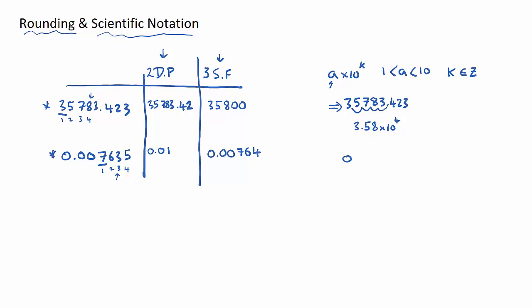For 0.007635 in scientific notation, the decimal point needs to move so the number reads 7.635, which is between 1 and 10. Counting the moves: 1, 2, 3 times. Rounding to two decimal places gives 7.64, because the 3 rounds up. So this is 7.64 × 10 to the power of 3. However, this is a small number — less than 1 — so the exponent is actually negative: 7.64 × 10⁻³. That's a snapshot of rounding and scientific notation; it's very important to leave your answer the way the question requests.